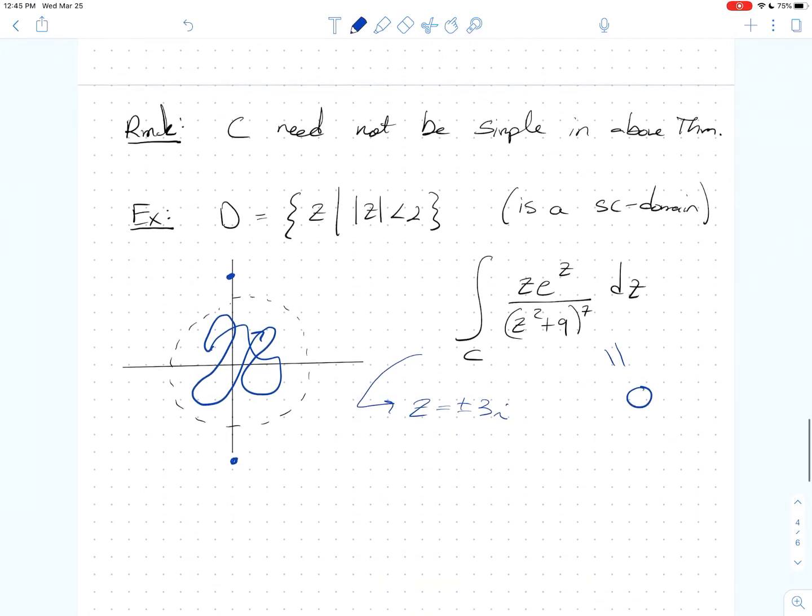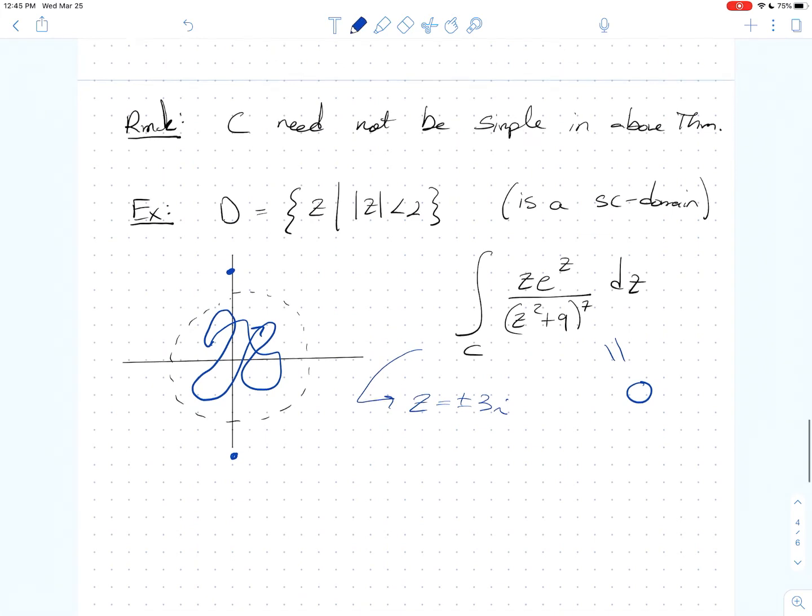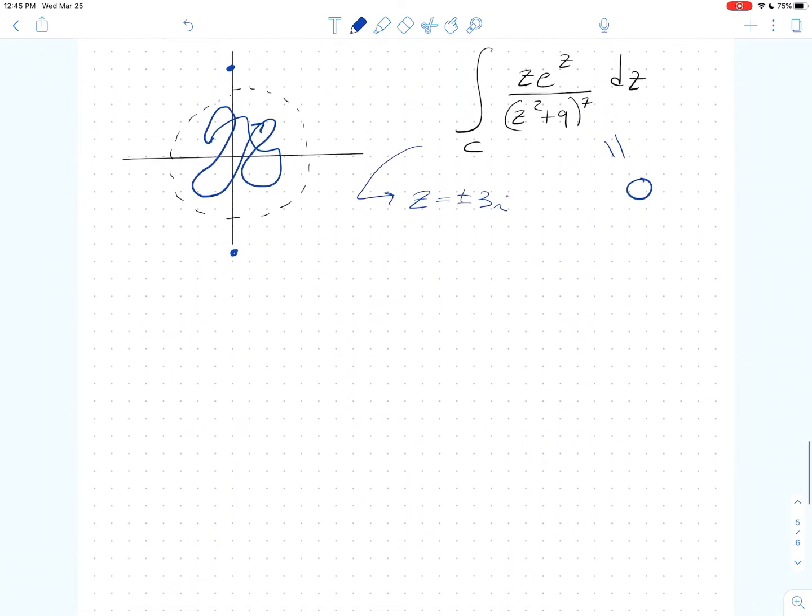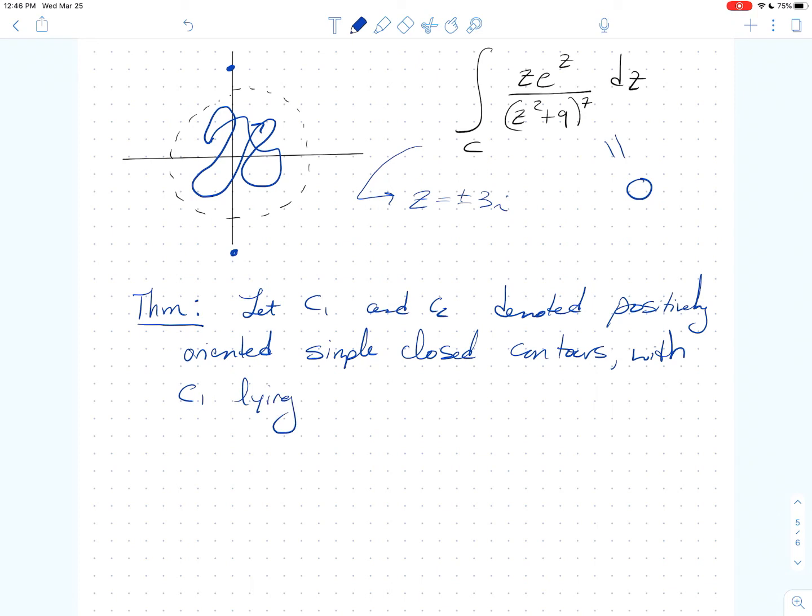Let's look at one last result together. The book, your book calls this a corollary. I'm going to call it a theorem only because it's a corollary to a different theorem. I'm not going to show you the result that this is a corollary to, but it's a really useful tool to keep in mind. So last result, let's let C1 and C2 denote positively oriented, simple closed contours.